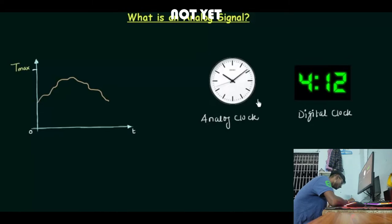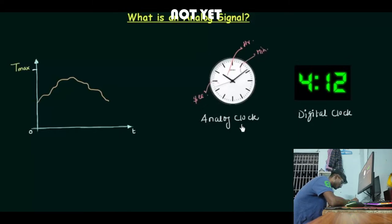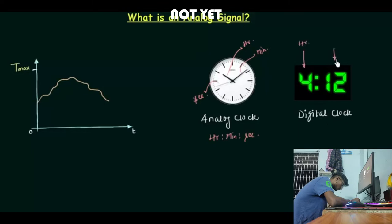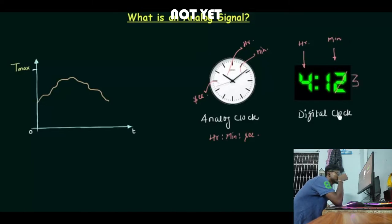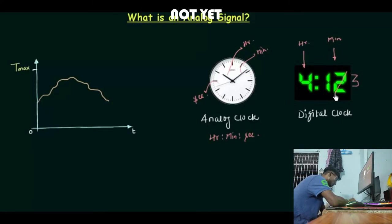In an analog clock, we have three hands: the hours hand, the minutes hand, and the seconds hand. So the analog clock can represent time as hours, minutes, and seconds — it can take any value within 24 hours. In a digital clock, we see hours and minutes but there is no seconds display. Once 60 seconds pass, the display jumps from 12 to 13, and we cannot see what is happening in between.